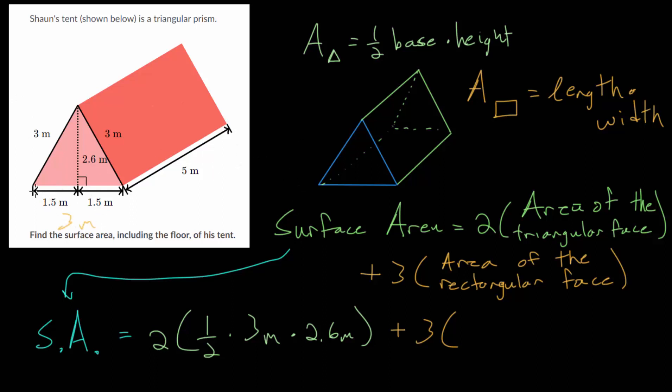And the one on the bottom, the floor of the tent, also 3 meters wide by 5 meters long. So we'll triple the 3 meter by 5 meter rectangular faces.